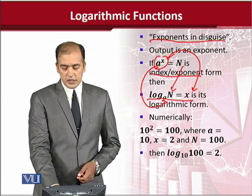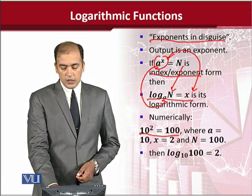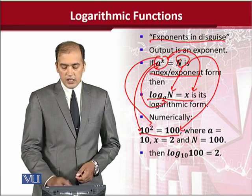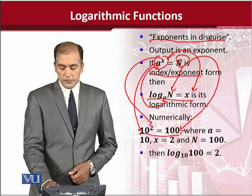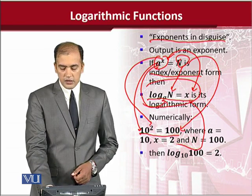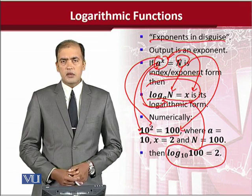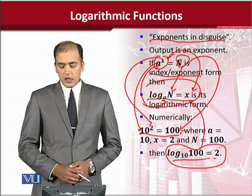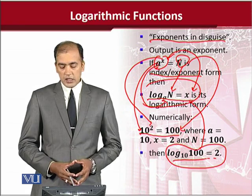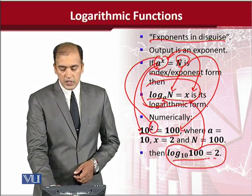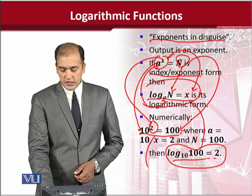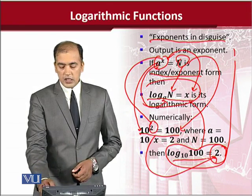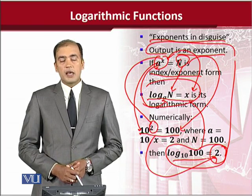Now, numerically, we can consider a similar sort of situation. In place of a, we have 10. In place of x, we have 2. And in place of N, we have 100. So, we have taken a numerical example. And we can use this formula to get the answer. And you can see we have simply substituted the values. Or we can do that jugglery again, replacing the values from one place to another to get the logarithmic form of it. We actually get the answer. And you can see the exponent from the exponent or index form comes as an answer. So, the output of the logarithmic function, as we have seen in the definition, is actually an exponent.